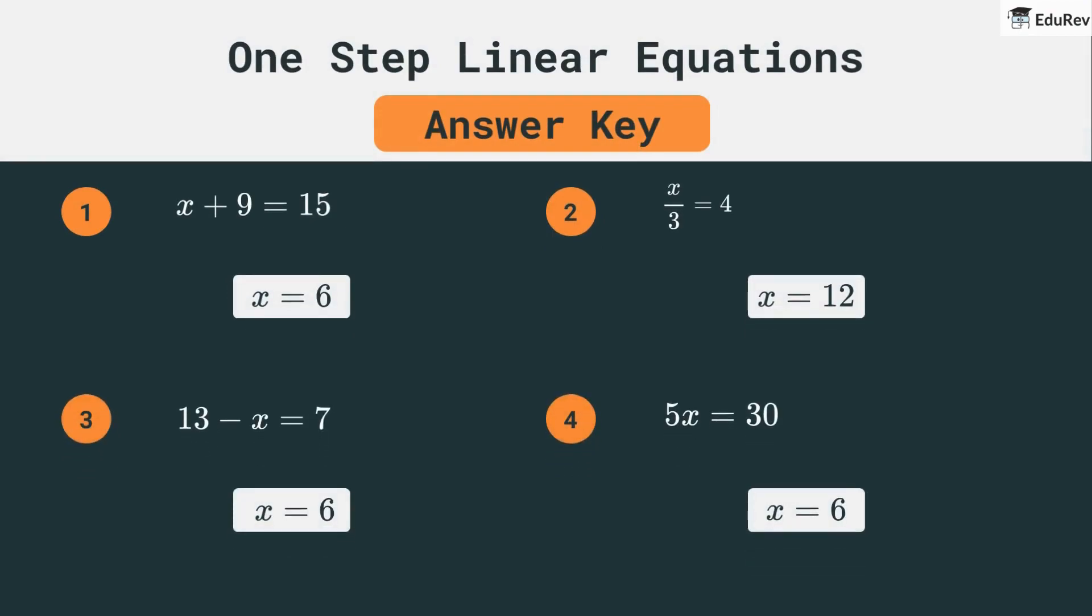For x plus 9 equal to 15, x is 6 because 15 minus 9 is 6. For the equation where 13 minus something equals 7, that something is 6. We have a few more solved here, like 5x equal to 30, which means x is 6. Did your answers match up?